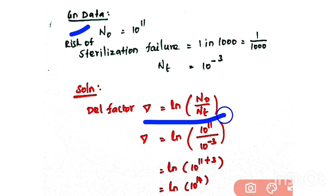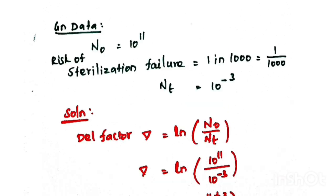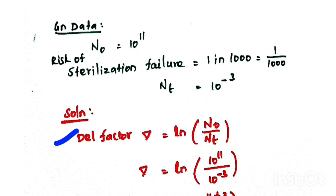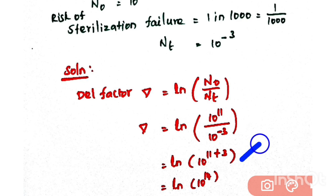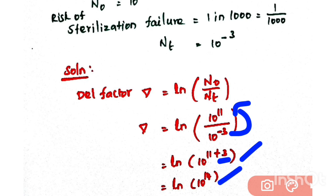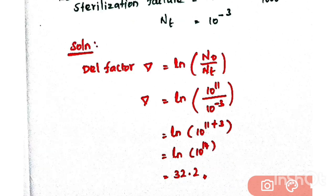Substituting into the formula: del = ln(N0 / Nt) = ln(10^11 / 10^-3). Moving 10^-3 to the numerator gives 10^(11+3) = 10^14. So del = ln(10^14) = 32.2. Therefore, the del factor is 32.2.